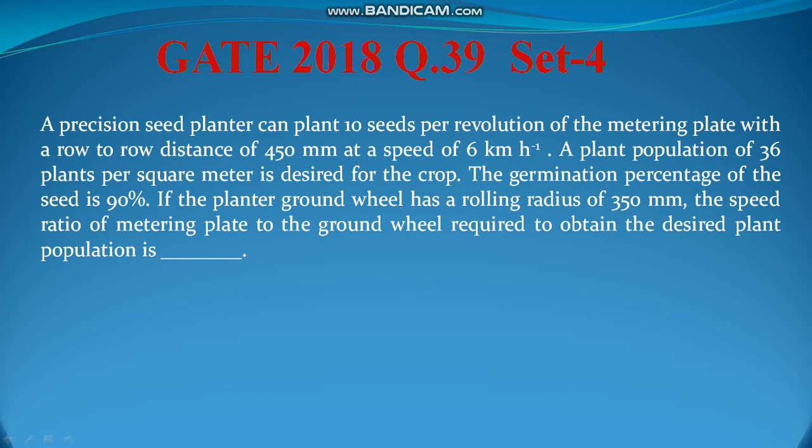First of all, this is a seed planter which is driven by the ground wheel. Whenever you need to solve a problem from the planter or seeder, you need to know that the forward speed does not have any effect on the seed rate or the seed spacing. So there is no effect. The speed is not required — it is just given to confuse you. Therefore the speed has no role in this problem. This should be clear to you so that you can easily solve this problem. This is the basic principle.